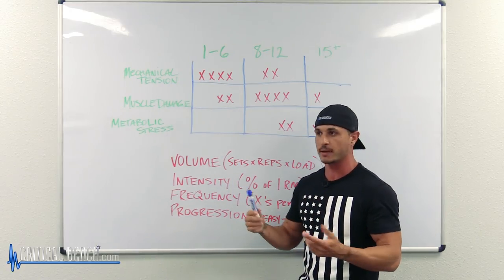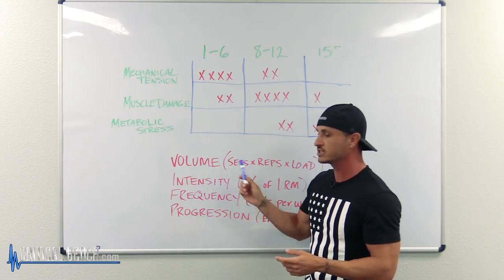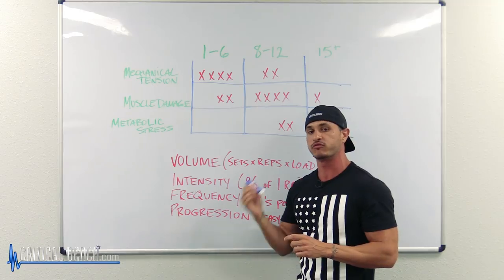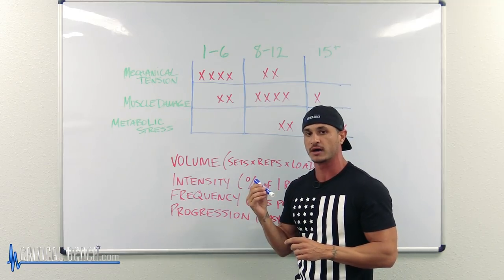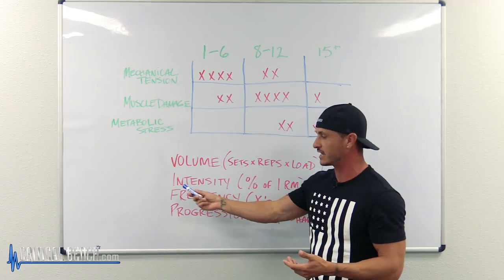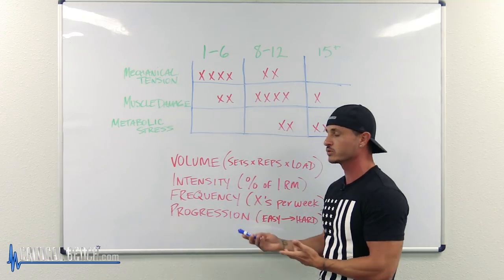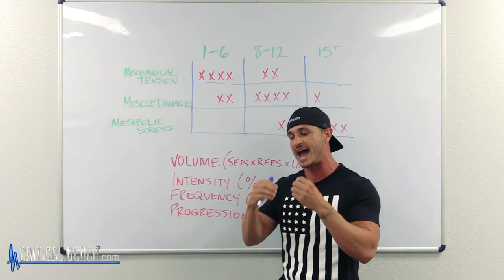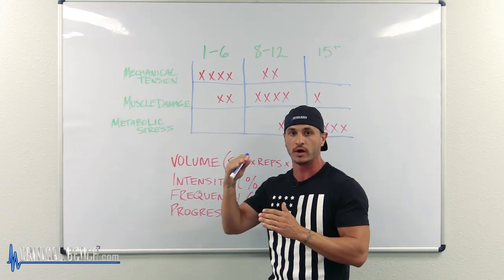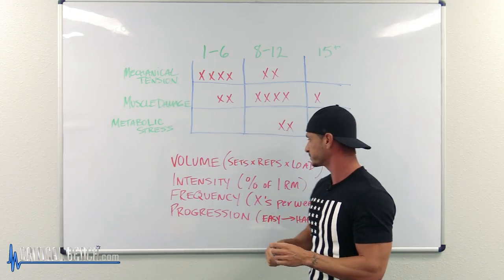Now, intensity. Intensity refers to how challenging that weight is for you, so in essence it's a percentage of your one rep max or what you're actually capable of. And I'll tell you why intensity is important, because if we know that for example 8 to 12 reps builds muscle and we need at least 4 sets, well, if I took this marker here and did 4 sets of 12, I'm not going to build any muscle. Why? Because the intensity is too low.